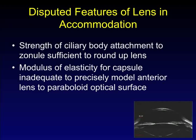What are some of the disputed features of accommodation? First, is the strength of the ciliary body attachment to the zonule sufficient to round up the lens? And second, is the modulus of elasticity — Young's modulus — for the capsule adequate to precisely model the anterior lens to a reproducible optical surface?